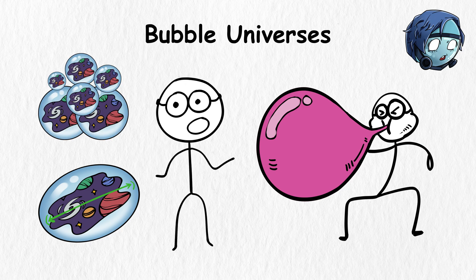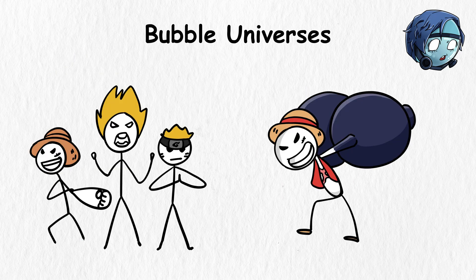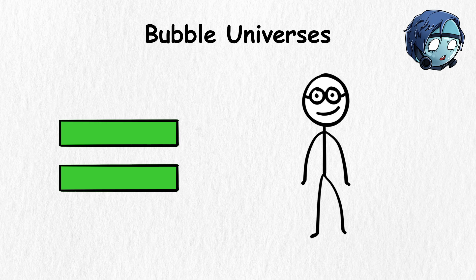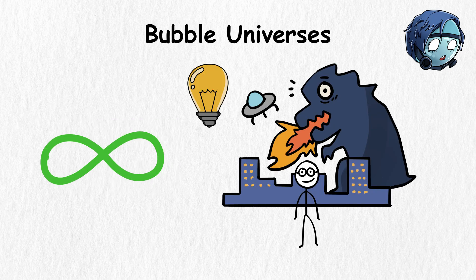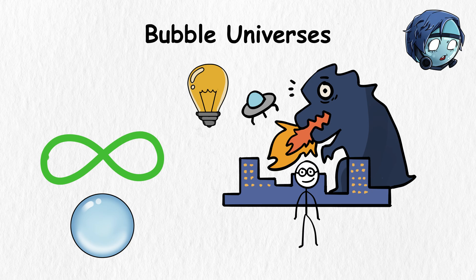Each bubble could be different from the one we know. For all we know, one could be a 2D cartoon universe with different physical laws. Others may be similar to our own universe, but with slight differences. The idea is that the possibilities are endless, and each bubble represents a different possibility.